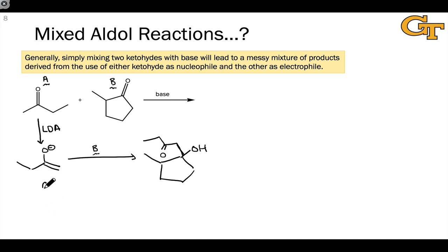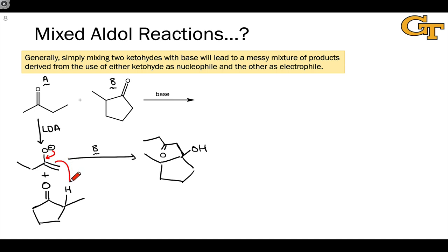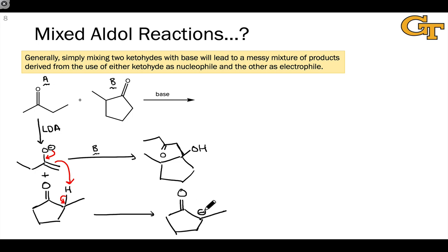Unfortunately, the answer is no, because the enolate, in addition to being a good nucleophile, is also a quite strong Brønsted base. And this means that it will have absolutely no problem engaging with the other reaction partner in proton transfer processes instead of nucleophilic addition. So this enolate can in fact grab a proton from our desired electrophile. This in turn produces an enolate — a nucleophilic version of the molecule that we'd like to act as the electrophile — and this is clearly a problem because now it's going to act as a nucleophile with respect to methyl ethyl ketone as the electrophile, leading to undesired aldol products.